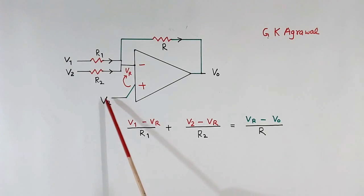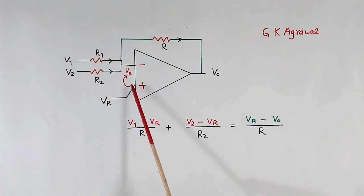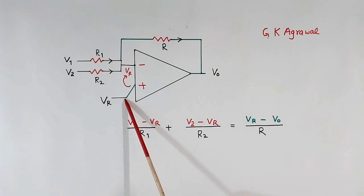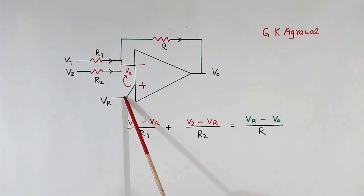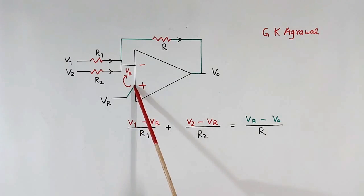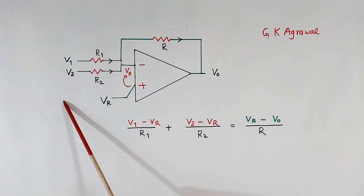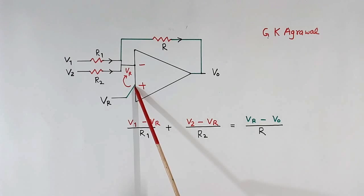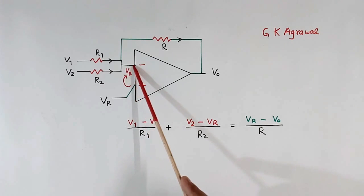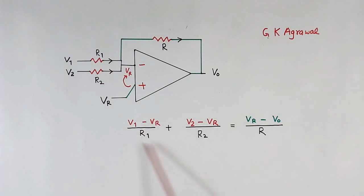Note that here I have written Vr, but the positive input itself can be a direct input signal — that is also fine. As I told you, first we have to calculate the voltage at the positive terminal. So whatever input is there, from that you calculate this voltage, then this voltage appears at the negative terminal, and then this equation is formed.